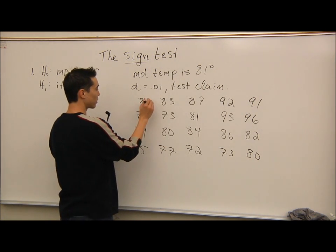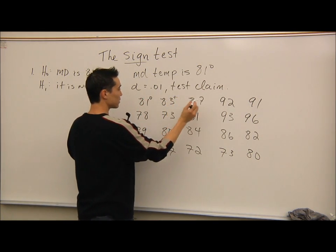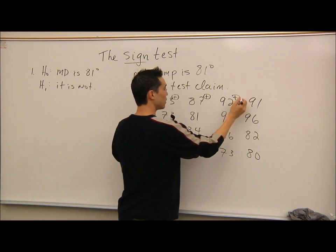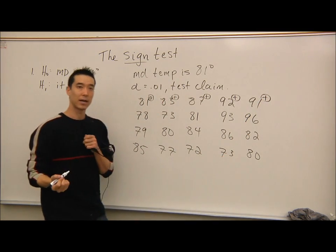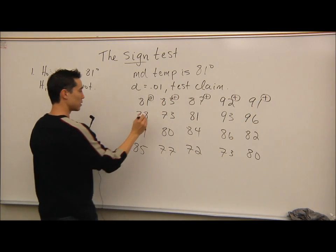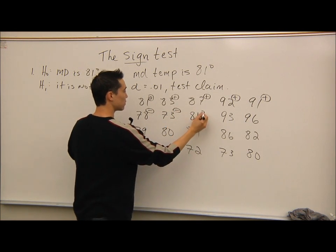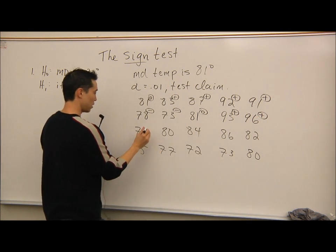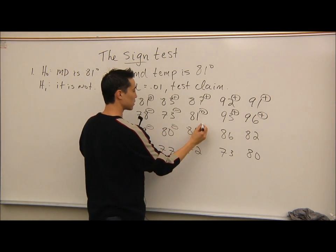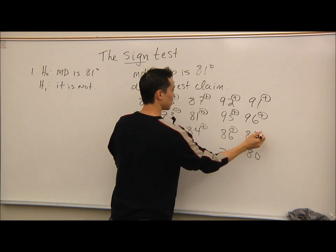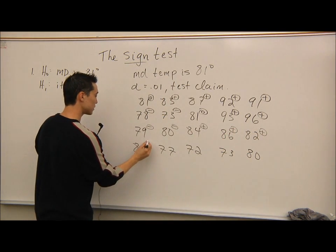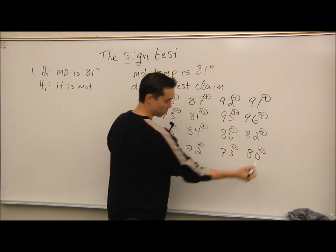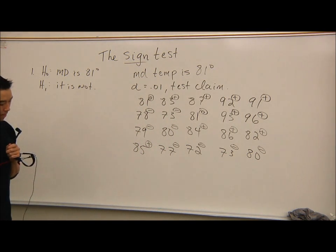Going through each value and writing the sign: that first one is tied — zero. 83 is a plus. Then plus, minus, minus, another zero, two more pluses, minus, minus, plus, plus, plus, plus, plus, minus, minus, minus, minus, minus.